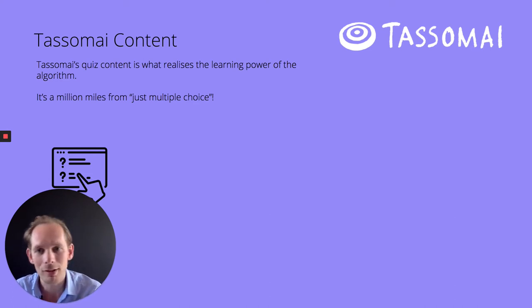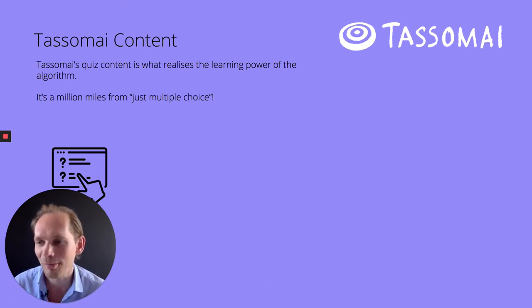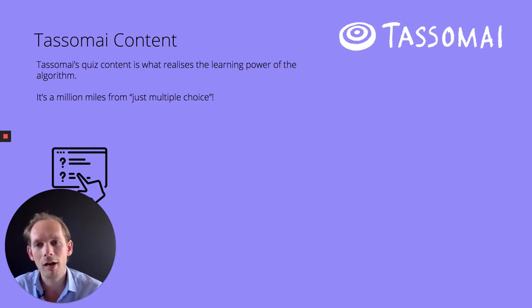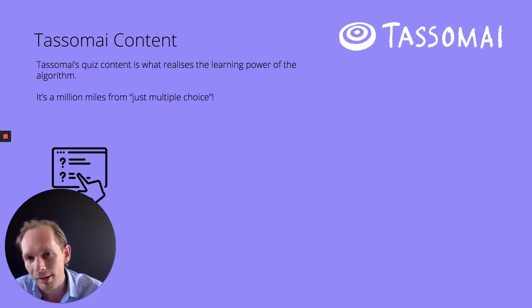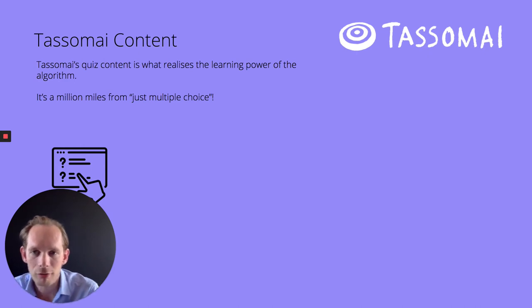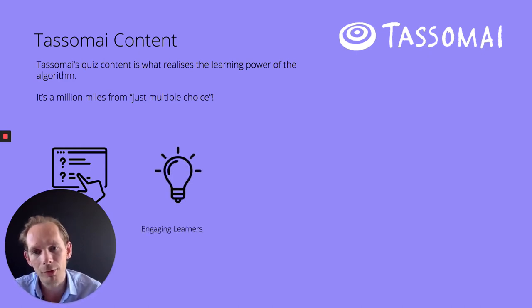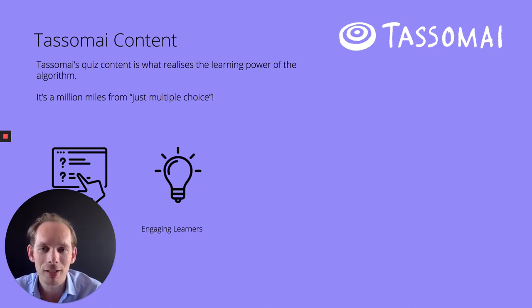Those books where you had to go to a particular paragraph and decide if you were going to turn left or right — those books are a little like the way the algorithm works in TaskMind. Every response a student gives directs the algorithm to change the way it's going to serve content to them in the future. By making them engage with content, it's engaging the learner in the reading.